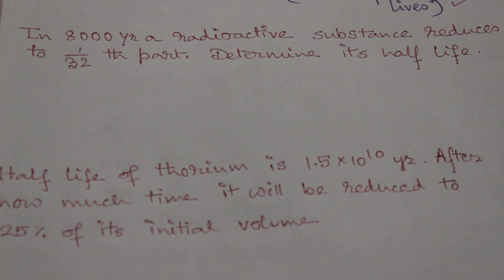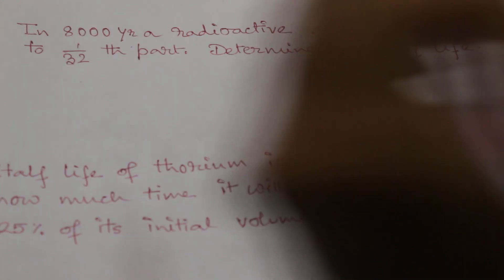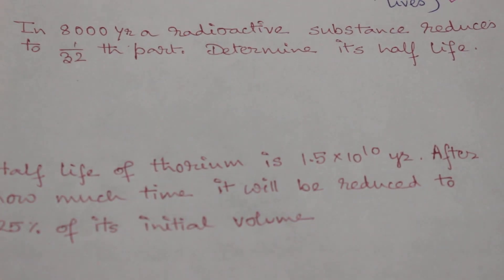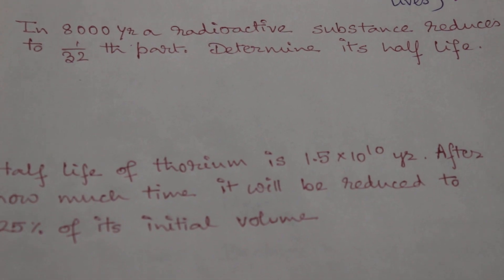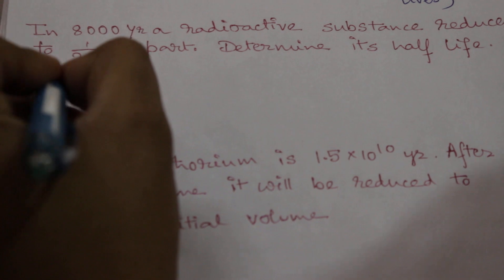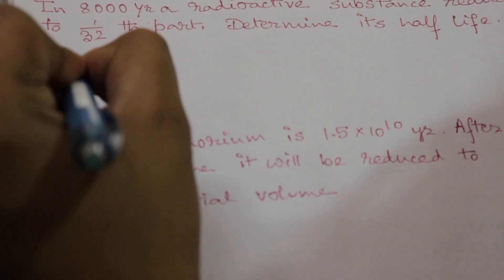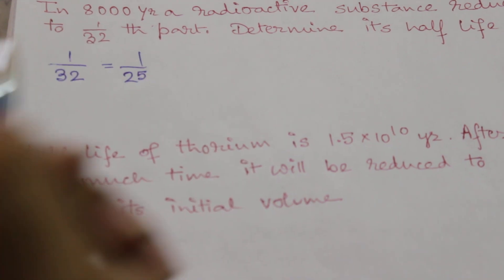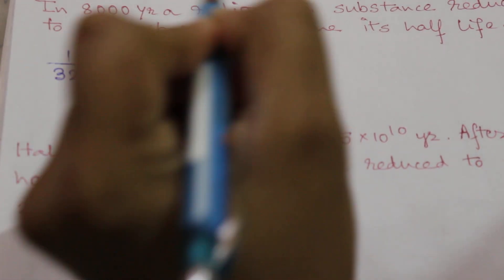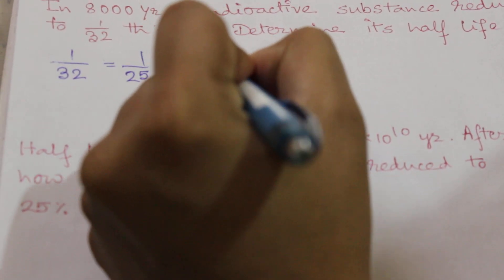Example number one: In 8000 years, a radioactive substance reduces to 1/32nd part. Determine its half-life. So 1 by 32 is 1 by 2 to the power 5.